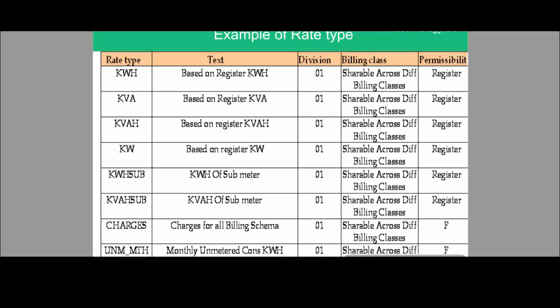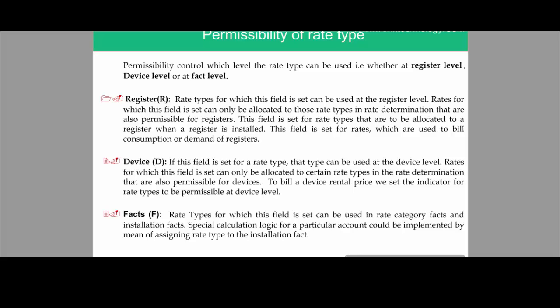This slide shows an example of a rate type with its description, the division it is allocated to, and the billing class — meaning all rate types on this slide are applicable to that billing class only because a billing class is attached. The permissibility field indicates whether this is register permissibility or fact permissibility. Permissibility controls at what level the rate type is used — it can be at register level, device level, or facts level.